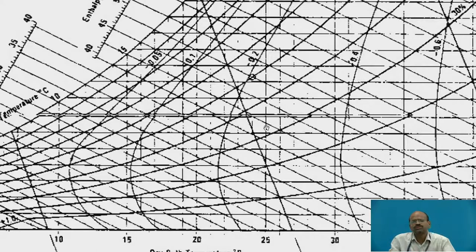This point is nothing but the state of the surrounding air or the moist air. So other properties easily we can obtain by using this psychrometric chart.